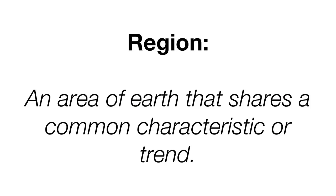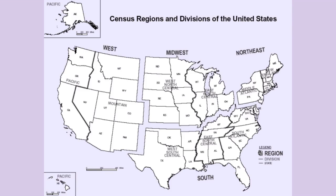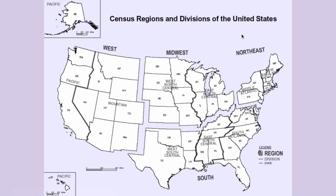Region is an area of earth that shares a common characteristic or trend. It could be a formal or uniform region, a functional or nodal region, or a vernacular or perceptual region. For example, these are formal regions established by the U.S. Census Bureau because they provide a unique set of shared characteristics. The Census Bureau uses divisions like the Western Division and the Southern Division to more effectively count the number of people in the United States every 10 years.